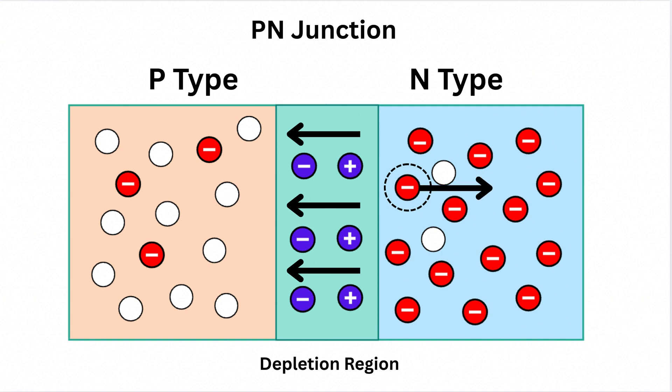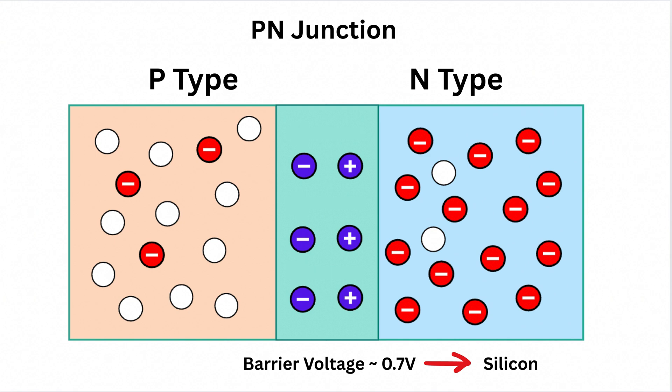Similarly, any hole trying to move from the P side toward the N side will feel a force pulling it back in this direction. That's why the flow of charge stops and the depletion region becomes stable, acting like a barrier. The strength of this electric field creates what we call a barrier voltage, just like a small battery built right into the junction. For silicon, this barrier voltage is around 0.7 volts. That means unless we apply an external voltage greater than this barrier voltage, current won't flow across the junction.